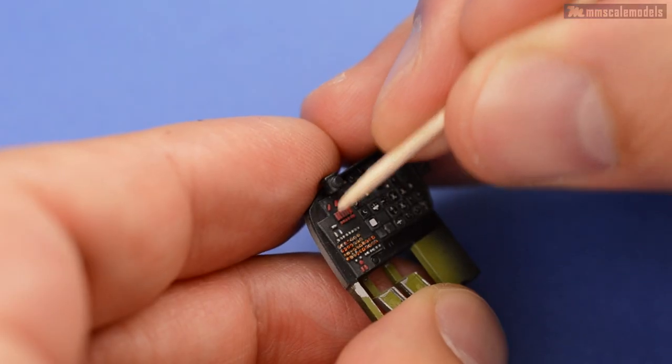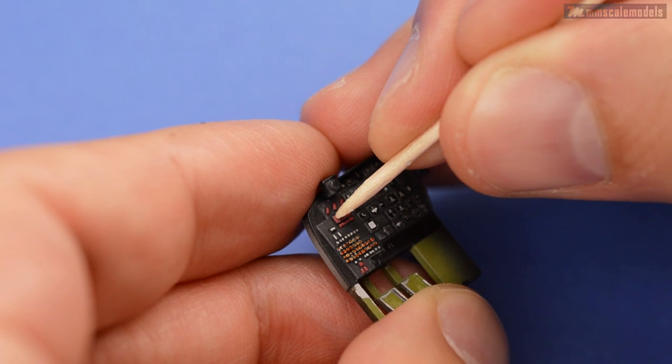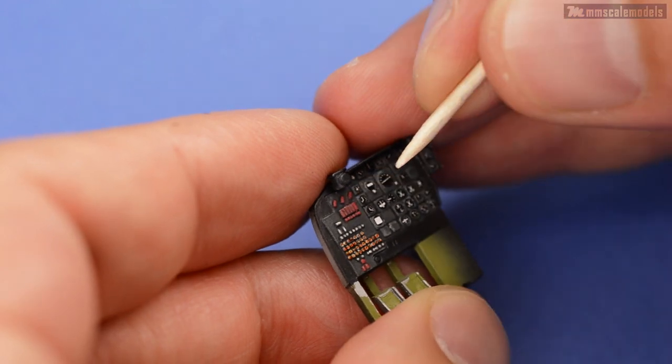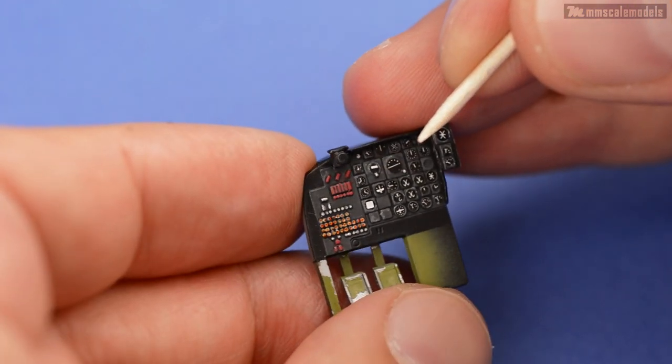Also if you notice I painted some of the switches as a whole so again using a toothpick I can remove the paint between the switches and have them look as individual details once again.